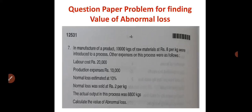The problem is as follows: In the manufacturing of a product, 10,000 kgs of raw materials at Rs. 8 per kg were introduced to a process. Other expenses were labor cost Rs. 20,000 and production expenses Rs. 10,000. Normal loss was estimated at 10%, and normal loss was sold at Rs. 2 per kg. The output in this process was 8,800 kgs.